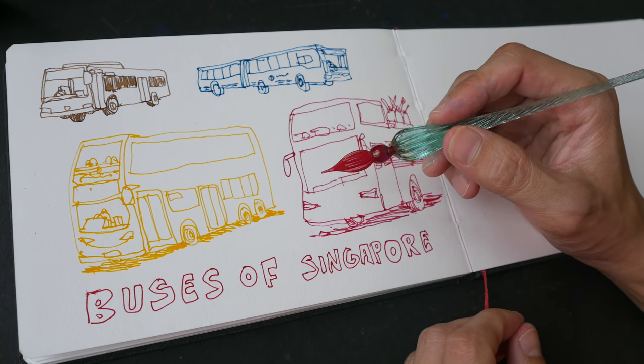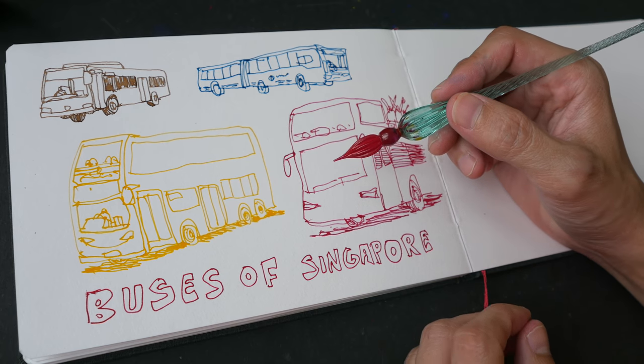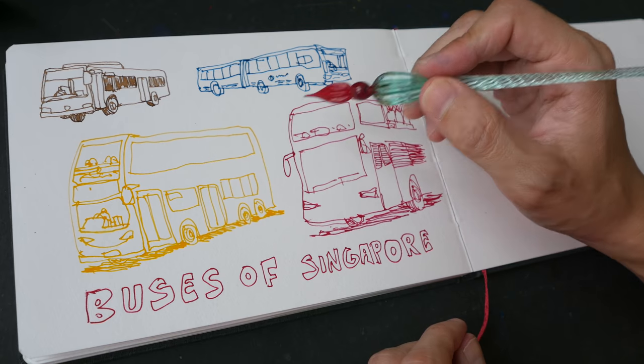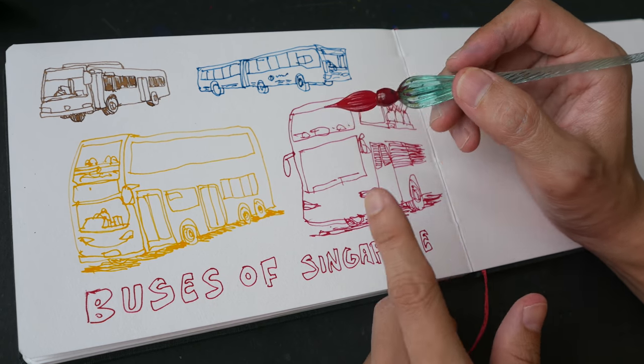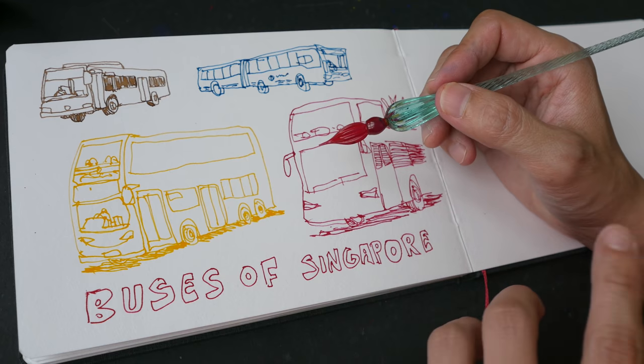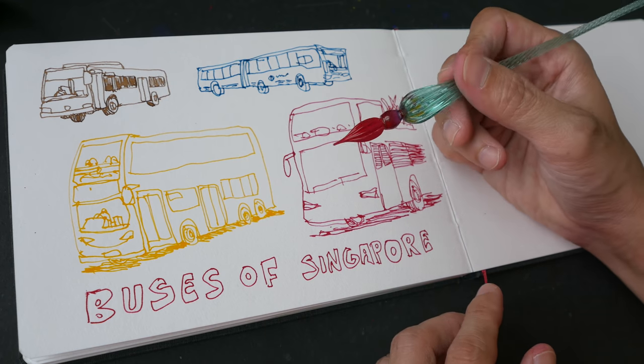To conclude, this pen may look gimmicky, but it actually works pretty well. There are some false starts, like when you're writing, the ink doesn't appear straight away. But once you get the ink going, once it starts flowing, it works pretty well. And the pen looks good, so it makes for a pretty good gift for your artist friends. And it's not too expensive as well.